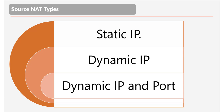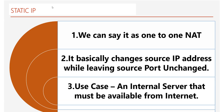Once this flowchart is done, next we will look at what the source NAT types are. Basically there are three source NAT types: Static IP, Dynamic IP, and Dynamic IP and Port. We'll take a look at these NAT types one by one. First is Static IP. Basically, Static IP is used for one-to-one NAT — it does NAT for one IP address to one IP address only. What it does is change the source IP address while leaving the source port unchanged.